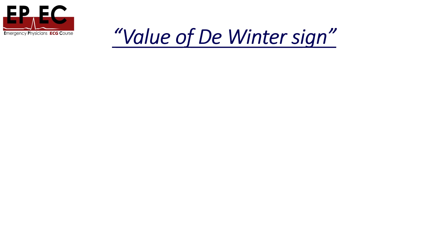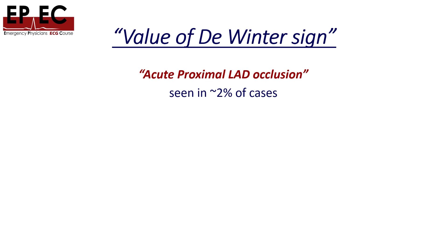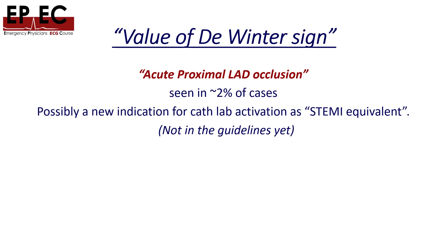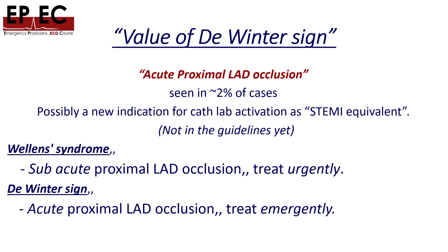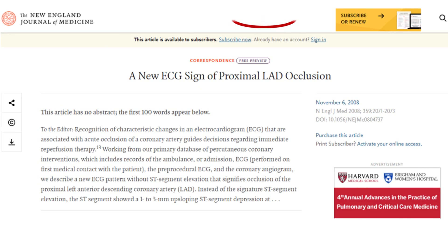What's the value of the De Winter sign? It indicates acute proximal LAD occlusion. It's seen in about 2% of cases with complete LAD occlusion and is possibly a new indication for cath lab activation as a STEMI equivalent, though to the best of my knowledge it is not in any guidelines yet. To differentiate it from Wellens syndrome: Wellens represents subacute occlusion of the proximal LAD and should be treated urgently, whereas the De Winter sign represents acute proximal LAD occlusion and should be treated emergently.